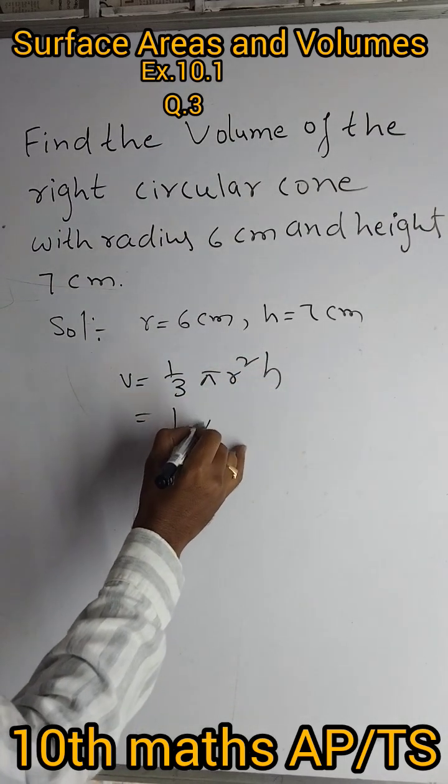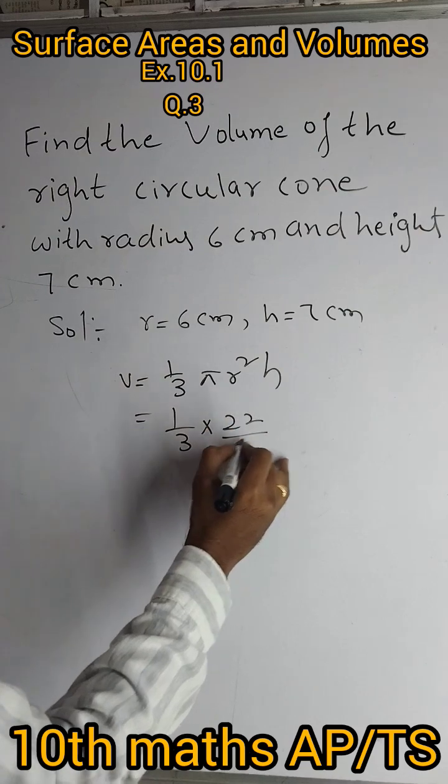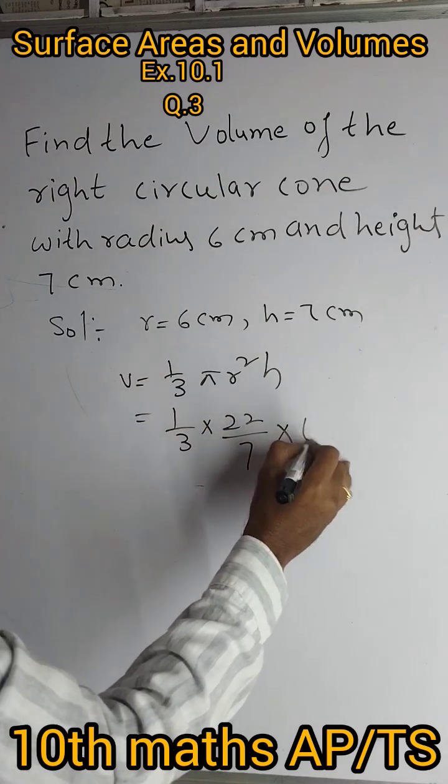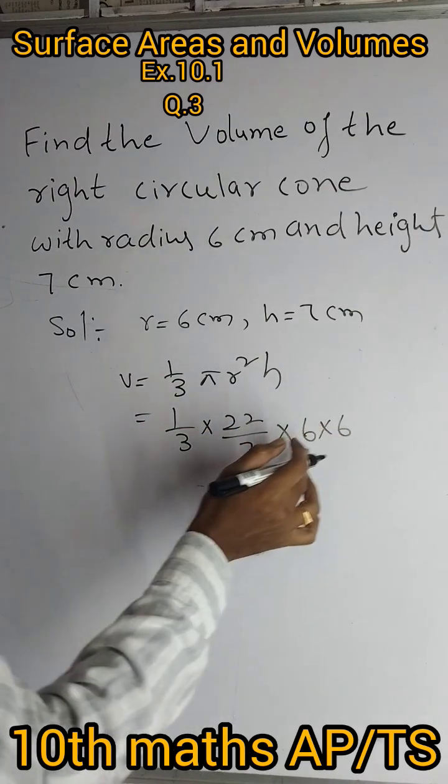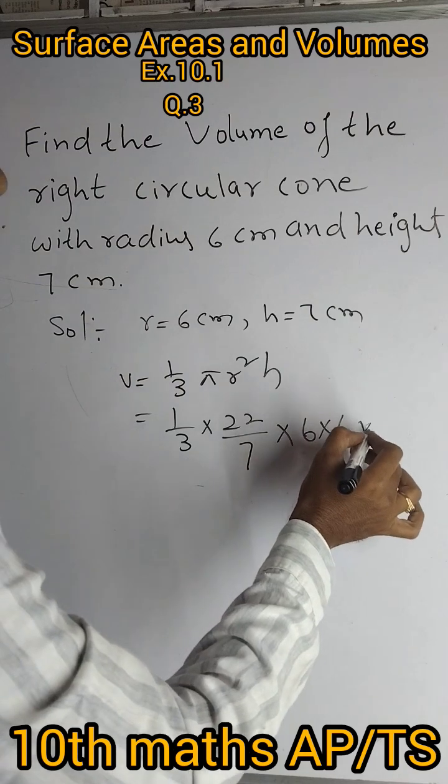So 1 by 3 into pi value that is 22 by 7 into r value 6. So r squared we are writing 6 into 6. h value is 7.